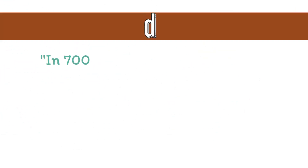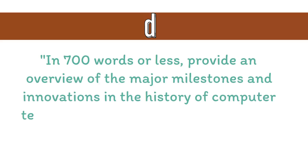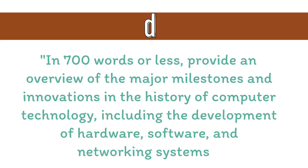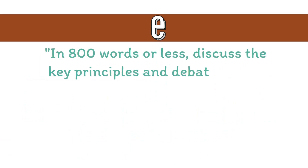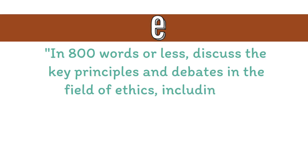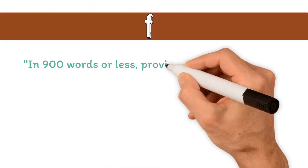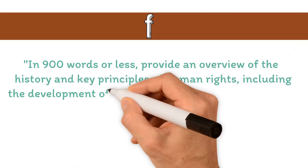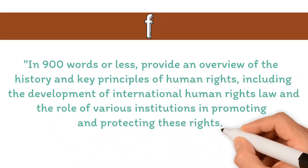D. In 700 words or less, provide an overview of the major milestones and innovations in the history of computer technology, including the development of hardware, software, and networking systems. E. In 800 words or less, discuss the key principles and debates in the field of ethics, including the differences between consequentialism, deontology, and virtue ethics. F. In 900 words or less, provide an overview of the history and key principles of human rights, including the development of international human rights laws and the role of various institutions in promoting and protecting these rights.